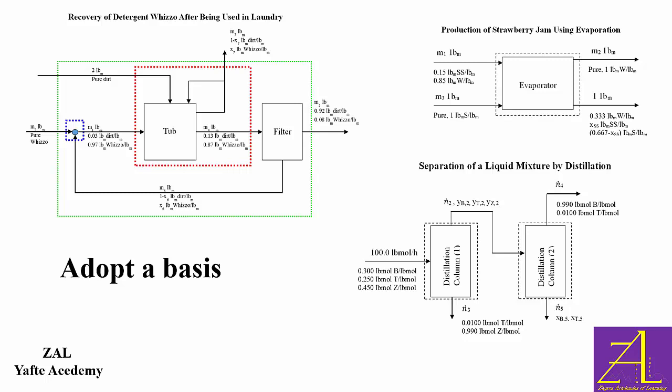100 lbmol per hour was directly given in the problem, but 1 lbm mass was not — instead, 60 lbm mass per hour was the product flow rate given in the problem. In the laundry problem, 100 lbm mass of dirty shirts was given, but only part of it — which was 2 lbm mass of dirt — was taken as a basis.